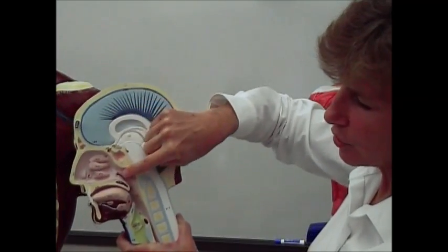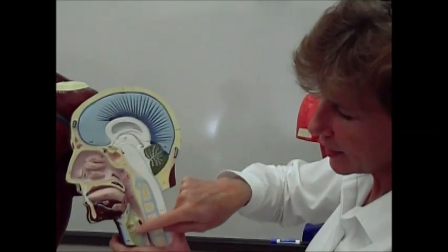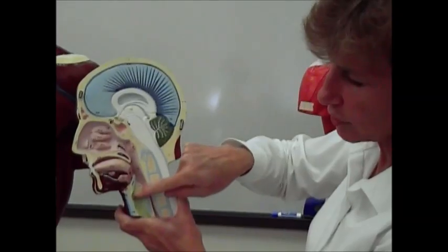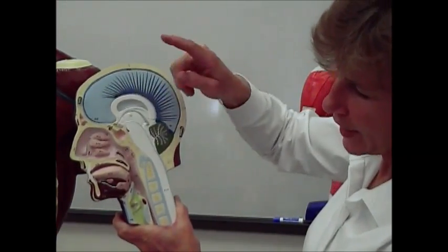Behind the nose, you have the nasopharynx. Behind the oral cavity, you have the oropharynx. And then down here where you have your little voice box that you'll learn about later on known as the larynx, you have the laryngopharynx.